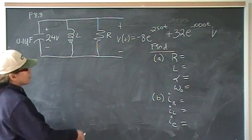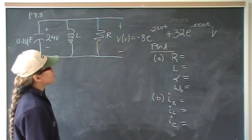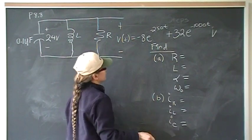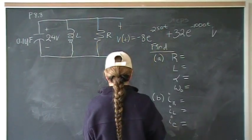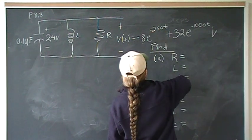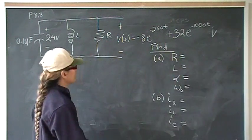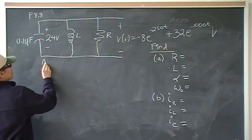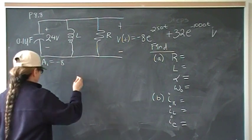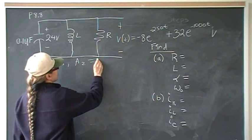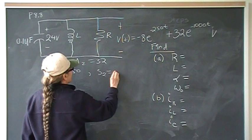Looking at the general voltage equation, we can immediately see it takes the format for an overdamped response. So we know: A1 is negative 8, A2 is 32. The negative 250 is S1 and the negative 1,000 is S2.